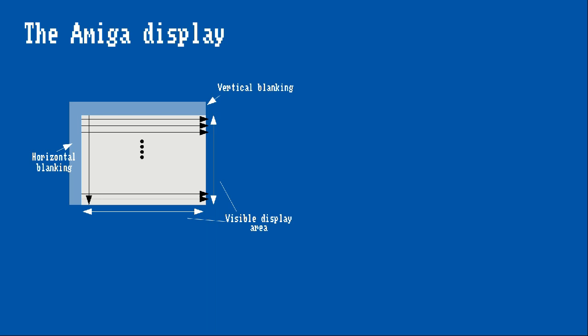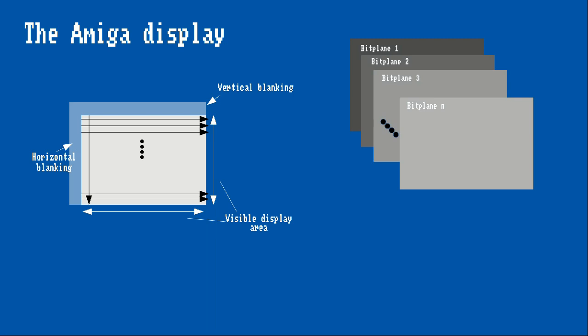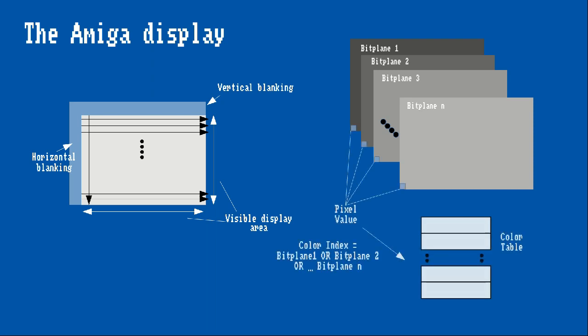The way color information is represented with Amiga hardware is typically through planar graphics, which means the image information is stored in data blocks called bitplanes. By layering these bitplanes on top of each other, the display hardware combines the data into a value for each pixel position. This value is an index into a color table defined in memory.